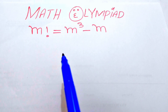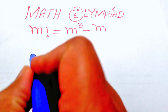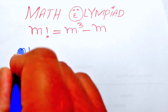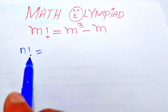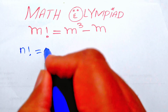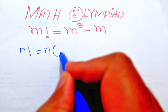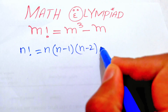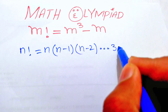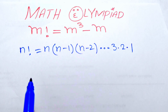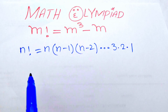We use the concept of factorial, so first we define the factorial sign. If we have n factorial, it means we decrease each term by one and multiply all these terms. We write it as n times (n minus 1) times (n minus 2), multiplied down to three, two, and one. This is the basic definition of a factorial.